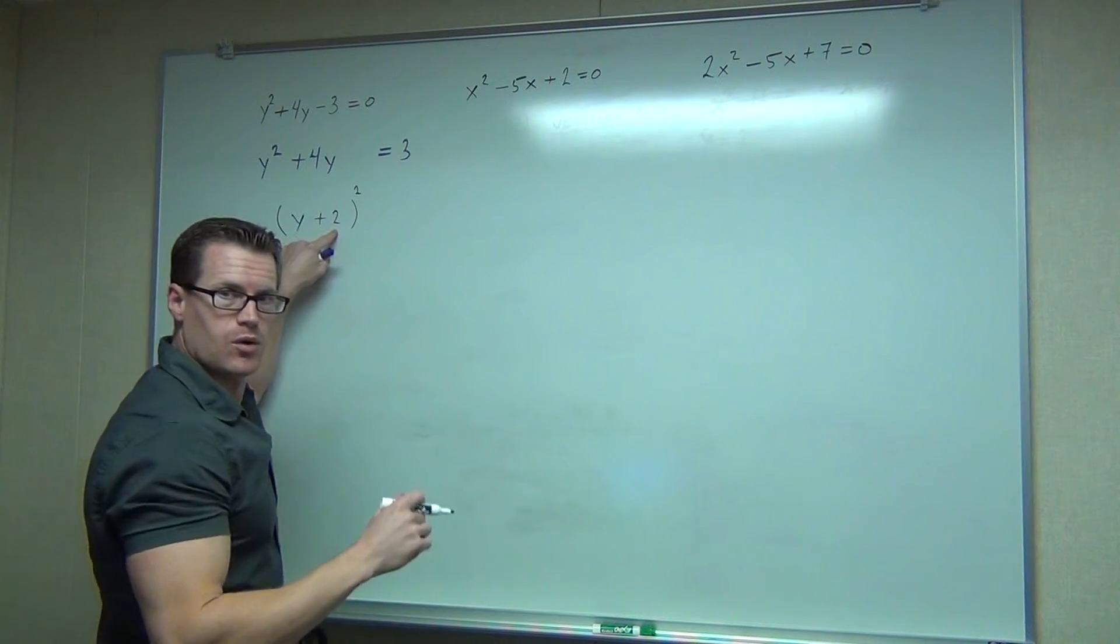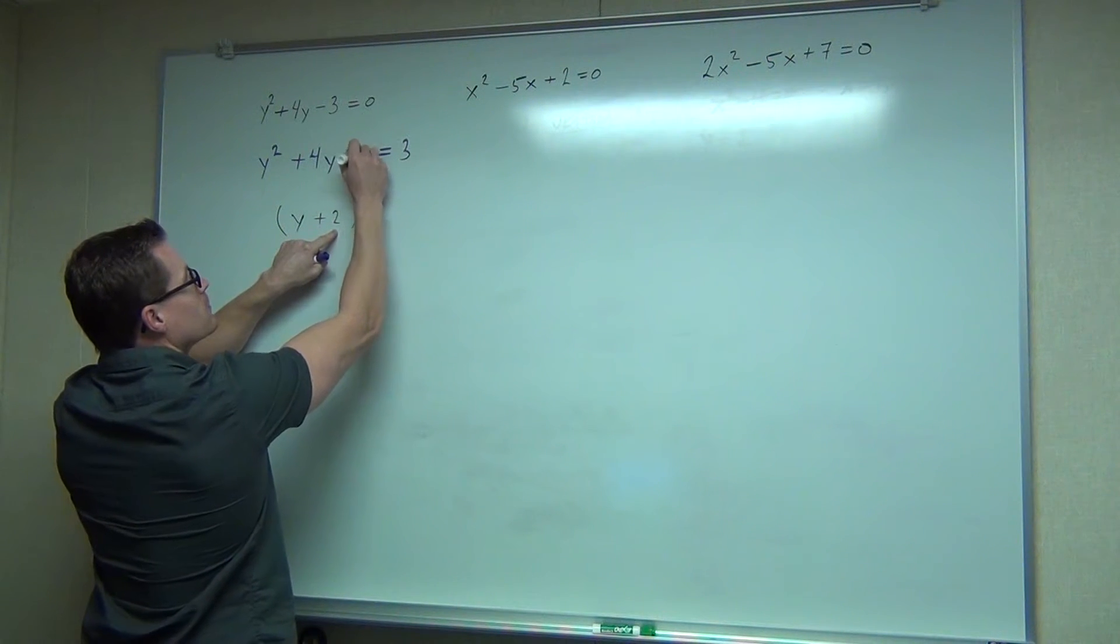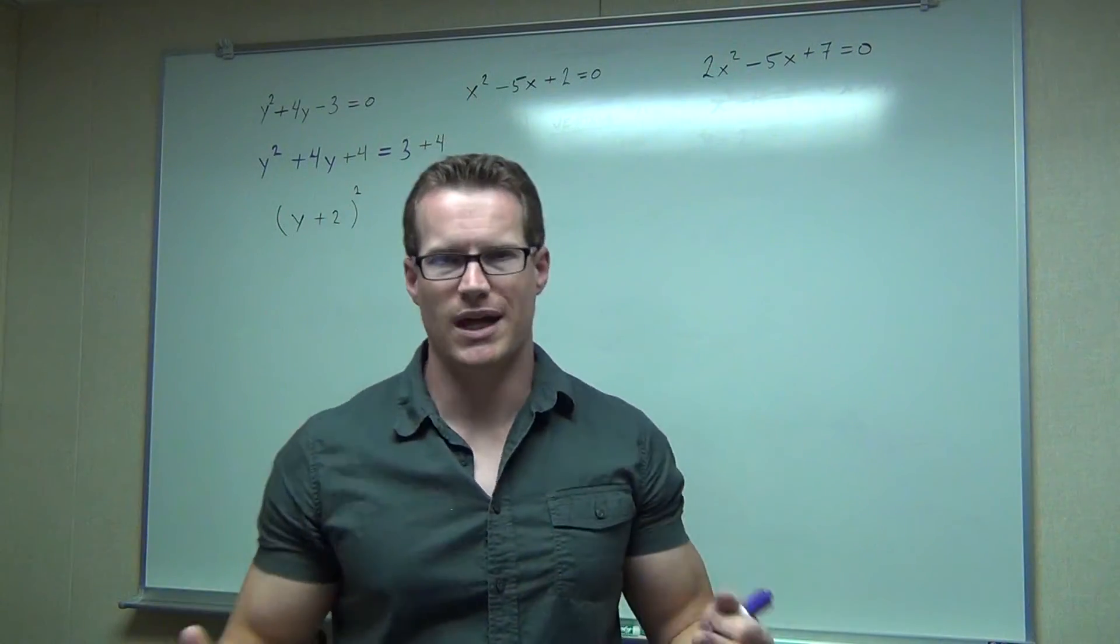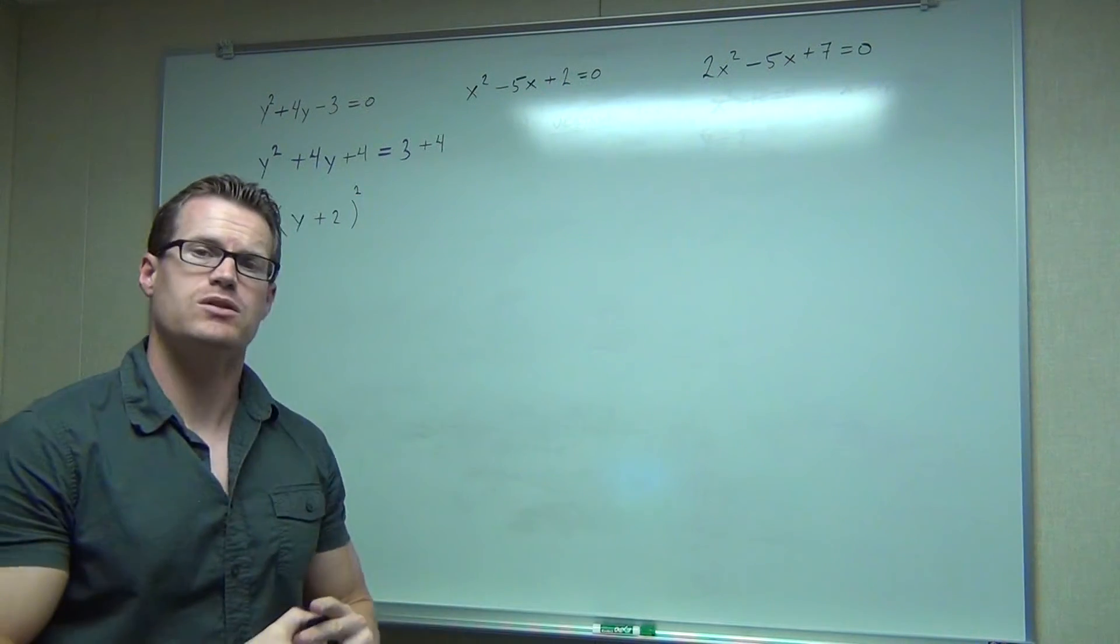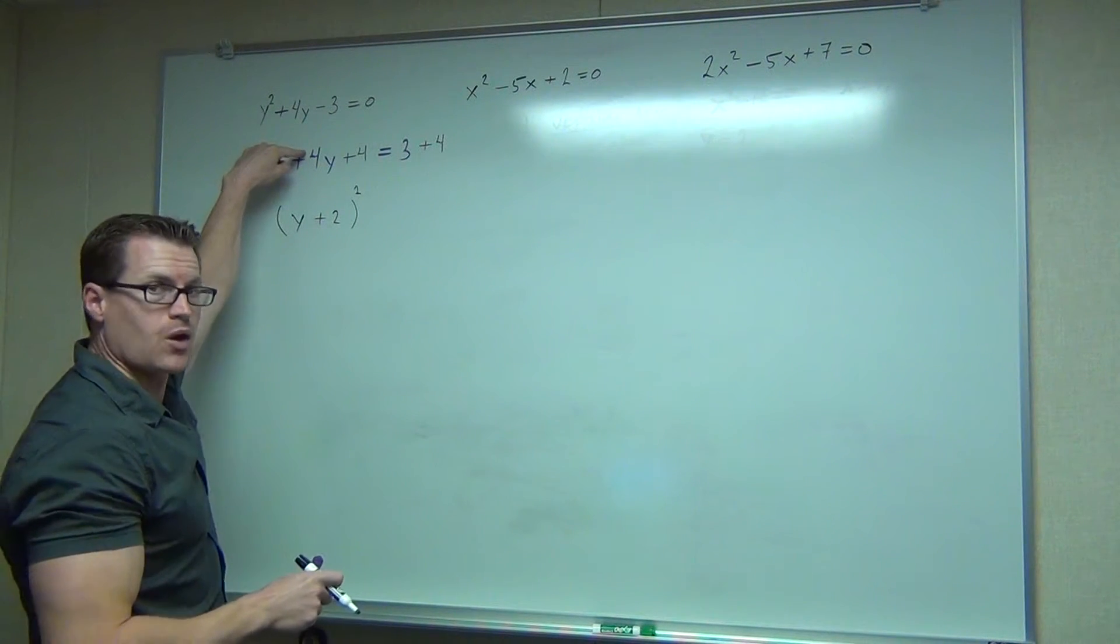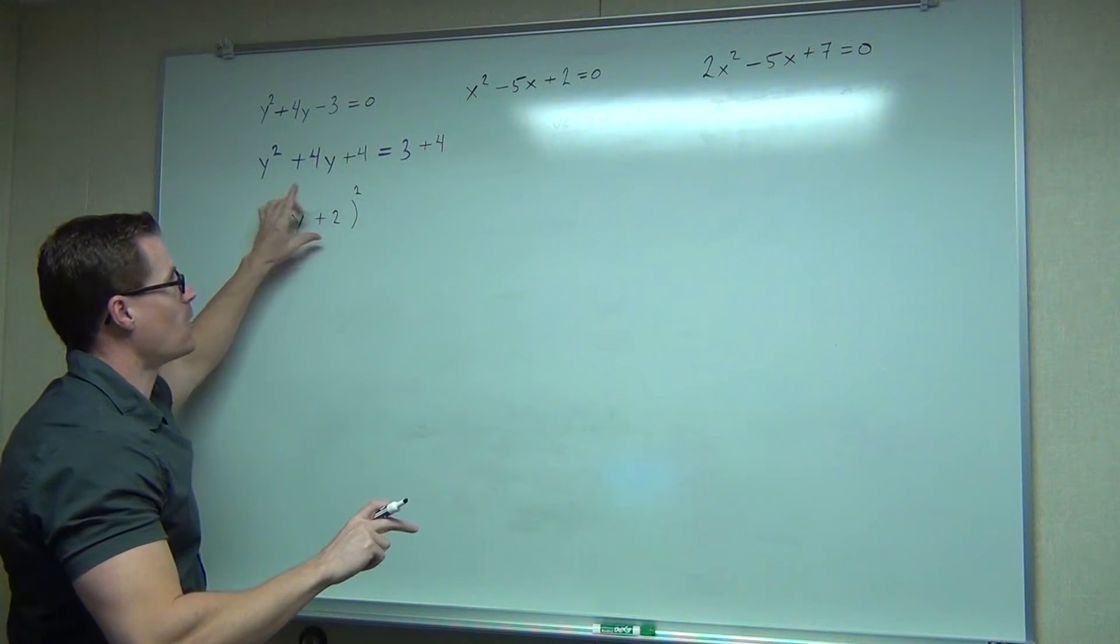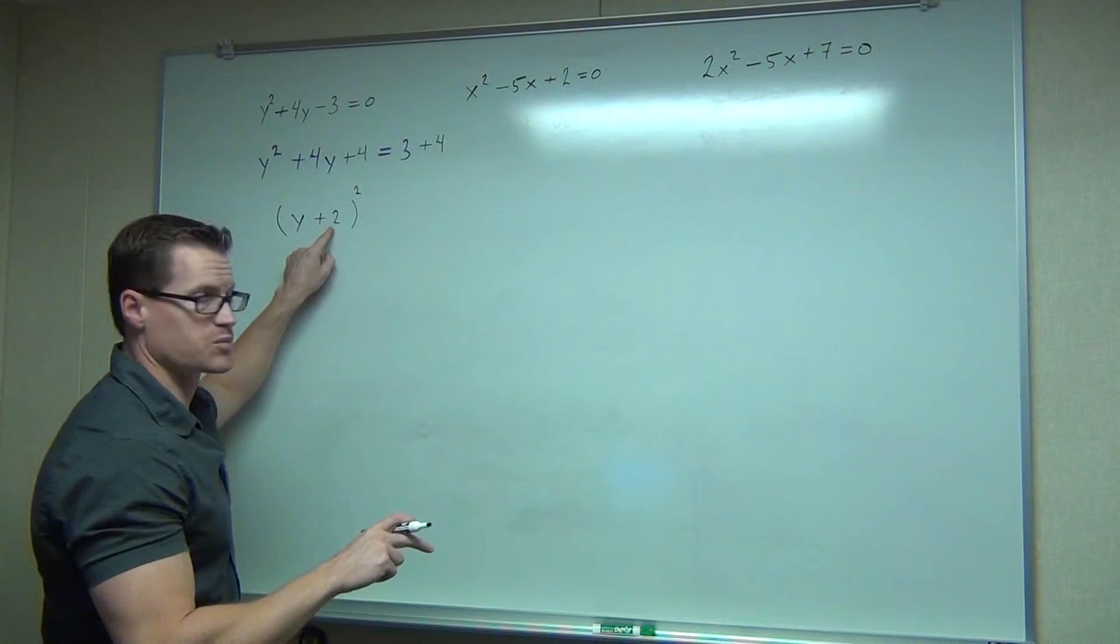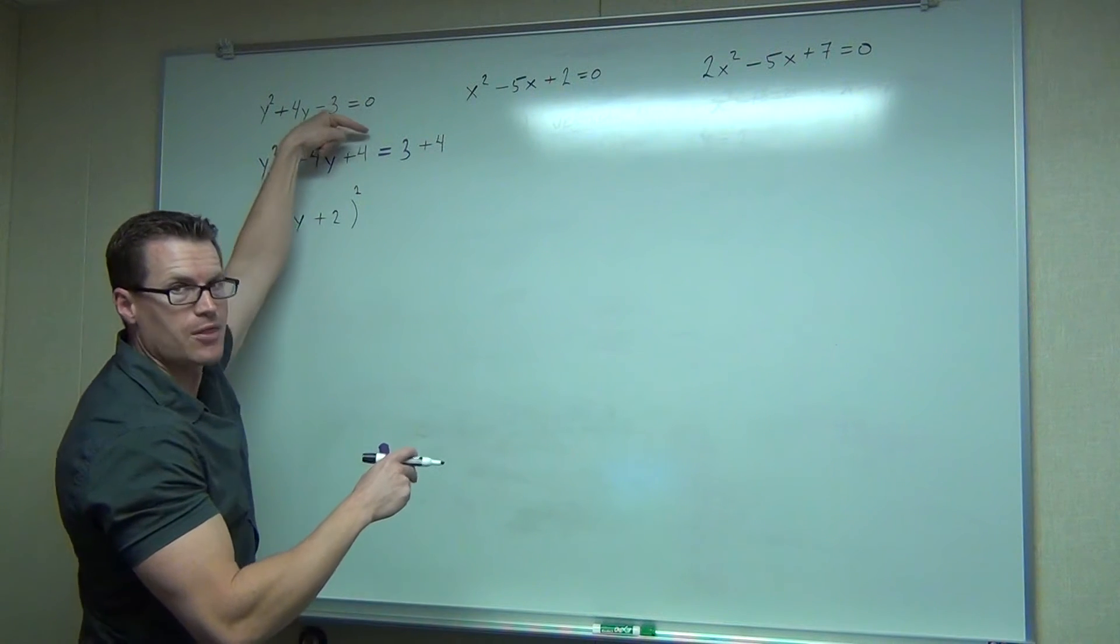Now square that number, you're always going to get a positive. Any number squared is positive. I'm going to put that here and there. It's got to go on both sides because we have an equation. So again, here's our steps. Add the 3. Take half of this number. Write it in your next step right now. Write it in your next step right now as y plus or minus depending on whether this is positive or negative. In this case, plus 2 squared. And then we square that number and we add that to both sides.